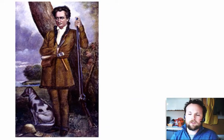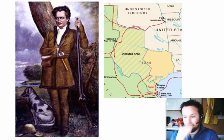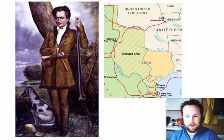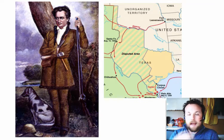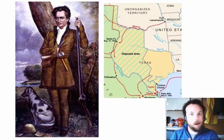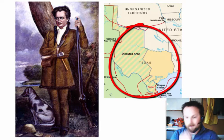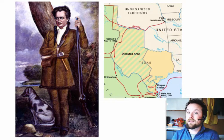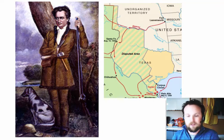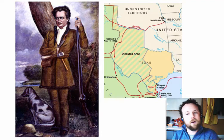At the time, only about 4,000 Mexicans were living in the Texas area. Austin planned on bringing about 300 American families to develop the land for farming. Most settlers came from the southern United States and brought their slaves. As Austin's colony grew and succeeded, Mexico gave grants to others. By 1830 — in just nine years — over 20,000 Americans were living in the area now known as Texas.